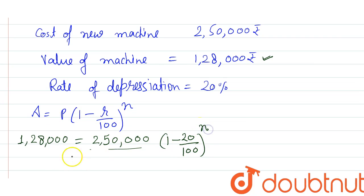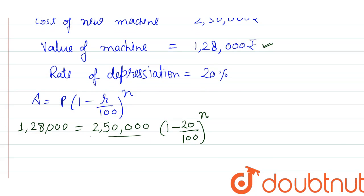And time we want to calculate. So here, zeros will cancel. This 2,50,000 will be in division. Now let me cut these zeros and simplify: 128 over 250 equals (1 minus 1/5) to the power n.